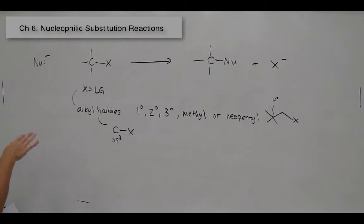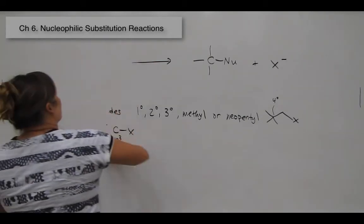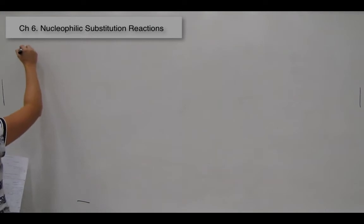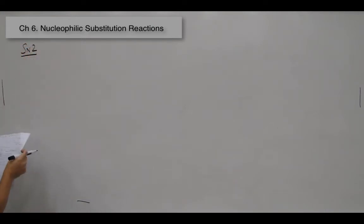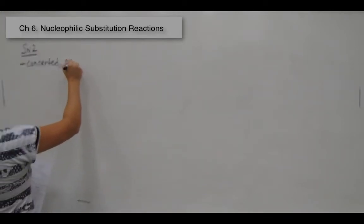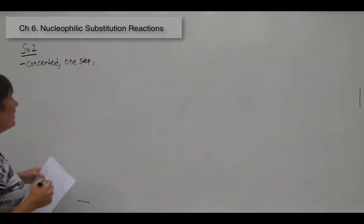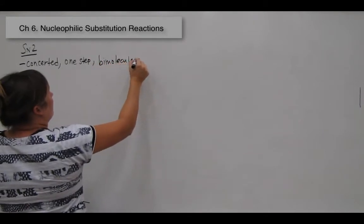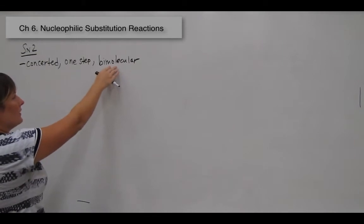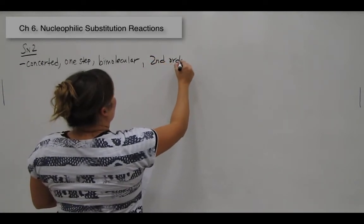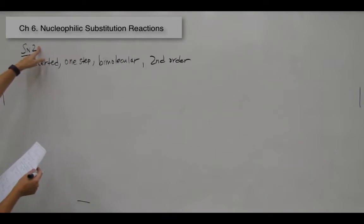Let's start with the first type of nucleophilic substitution reaction, which is SN2, and go over the key factors. SN2 is concerted — it occurs in one step. It is bimolecular, meaning two molecules are reacting in the transition state of the slow step. And it is second order — substitution, nucleophilic, second order — that's where the two comes from.